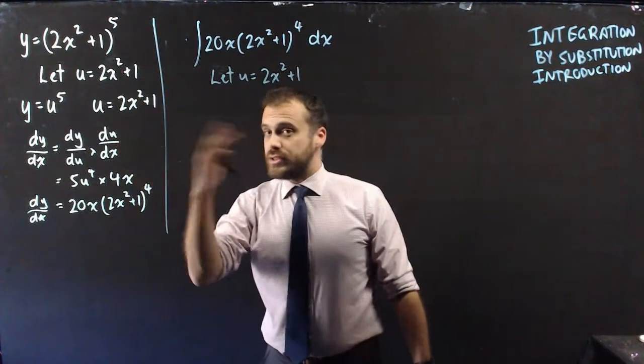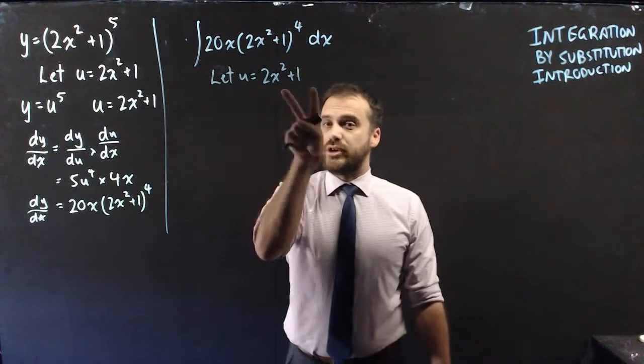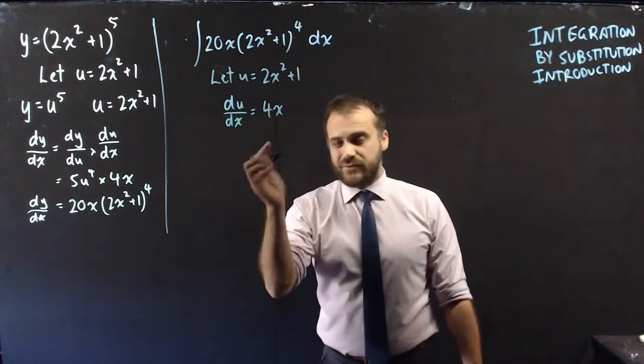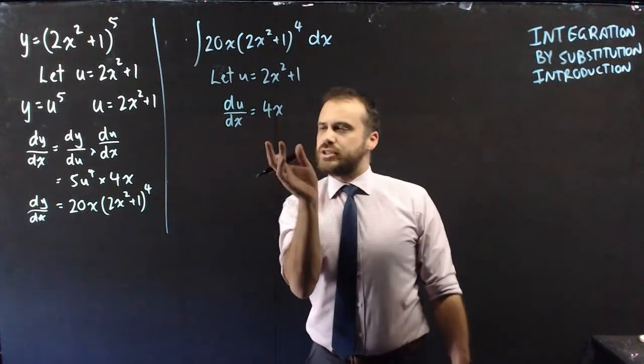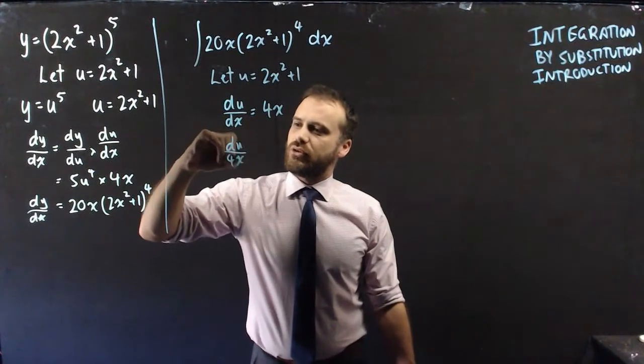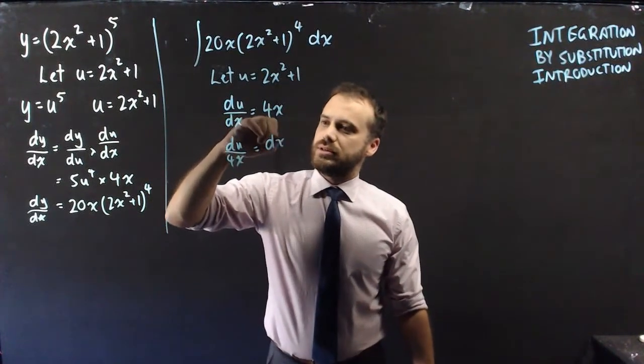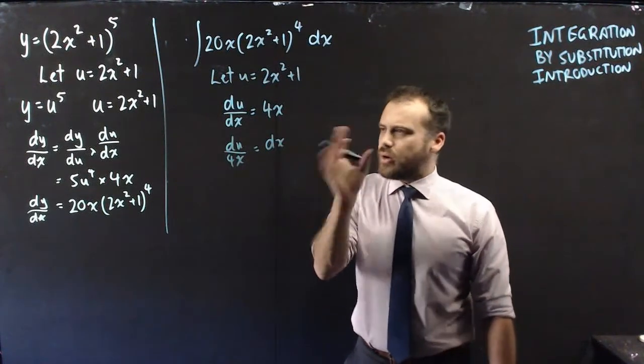This is a little bit different but there's some similarities. What I'm going to do next is just find the derivative of that. Once I have that I'm going to do something that you haven't really seen before. I'm going to rearrange this derivative to be in the form du/4x equals dx. Now you might be thinking, but why? Why are we doing that?